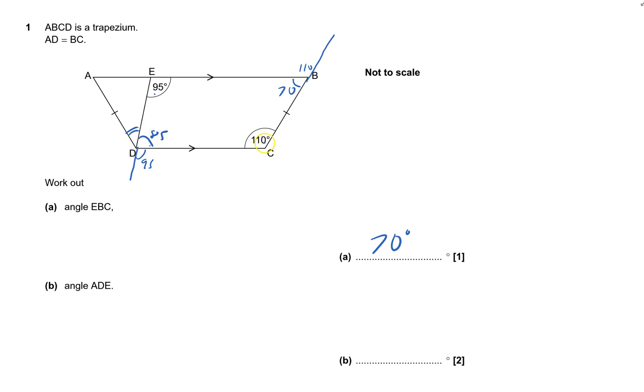But I know this angle here is 110, and because it's an isosceles trapezium, it has line symmetry. If I cut it down the middle, or fold it in the middle, that 110 would exactly fit over here. So the whole of that angle there is 110, and I just want this bit, so it's 110 minus that 85.